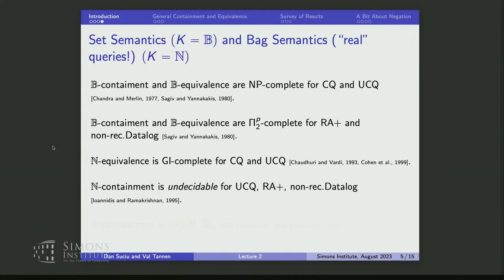GI stands for graph isomorphism. The complexity class of problems interreducible with graph isomorphism is not clearly understood — it is widely believed not to be the same as NP. Bag equivalence is GI-complete; this was shown by Chaudhuri and Vardi, then extended to unions of conjunctive queries by Cohen et al. Bag semantics containment is actually undecidable for unions of conjunctive queries — a result of Ioannidis and Ramakrishnan.